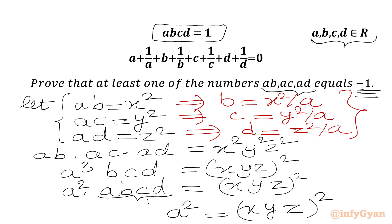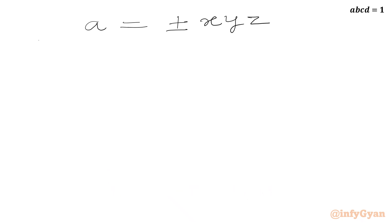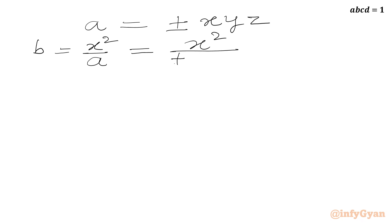Now we take the square root of both sides, keeping the plus-minus sign. So A = ±xyz. The value of B is x²/A = x²/(±xyz). One x cancels from numerator and denominator, giving B = ±x/(yz).